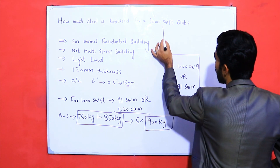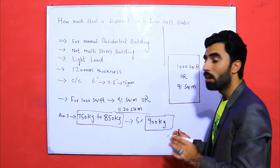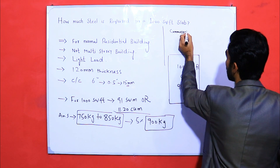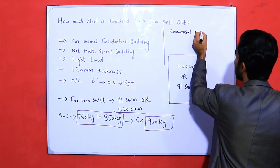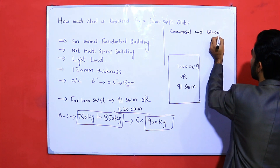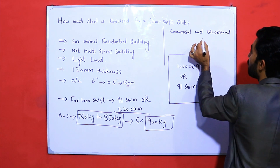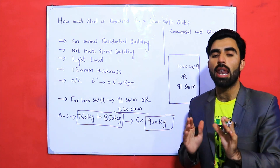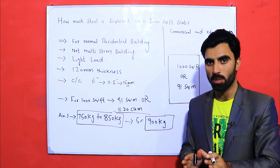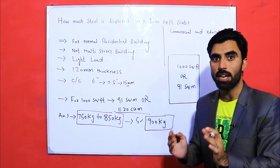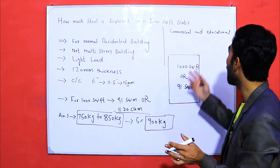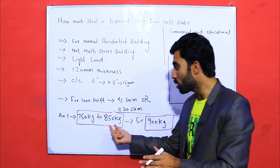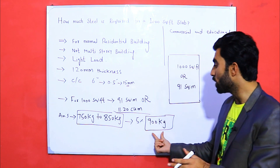But remember, this quantity is for a normal residential building. For commercial and educational buildings, the steel quantity should be increased because there is more live load — more people are walking in the building — so the steel quantity will be increased compared to the 900 kg figure discussed.